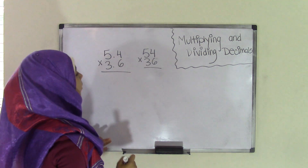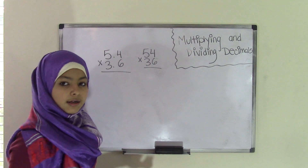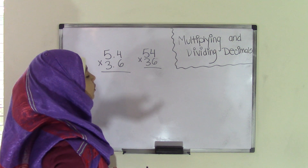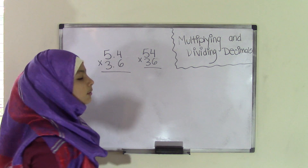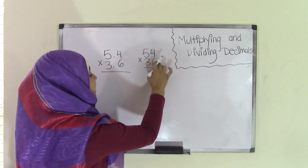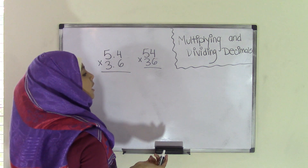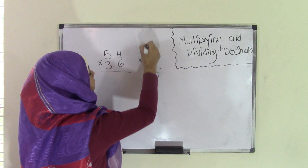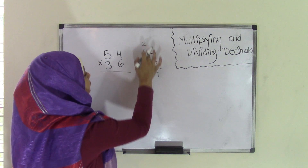We're going to forget about the decimal points and come back to them once we have our product. Since this is just simple multiplication, we're going to multiply 54 times 36. Whenever we're multiplying, we start from right to left, top to bottom. So first, we have 6 times 4, which is 24. We put the 4 in the ones place and carry the 2 up onto the 5, which is in the tens place.